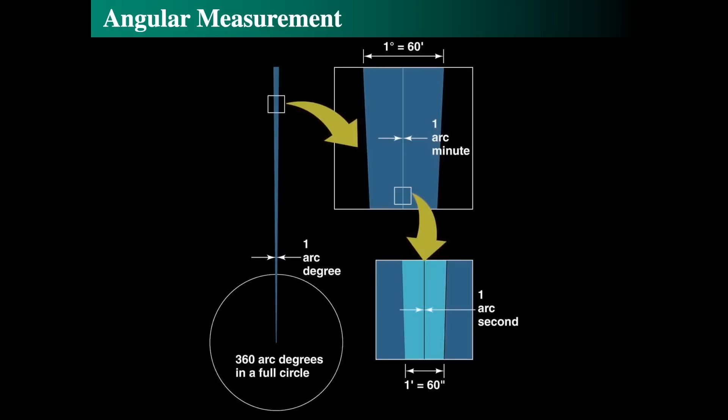Angular measurement can be broken down into smaller and smaller increments. We all know that there's 360 degrees in a circle, and therefore there are 36 fists all the way around a circle held at arm's length. We can divide those things up into smaller and smaller angles because there are things separated by very small angles in the sky.